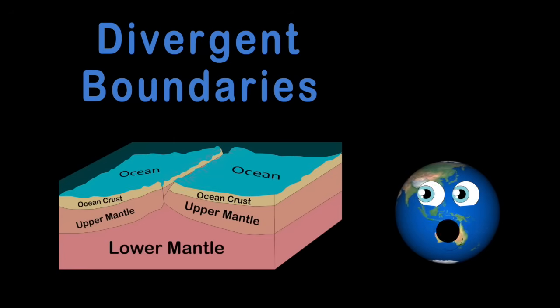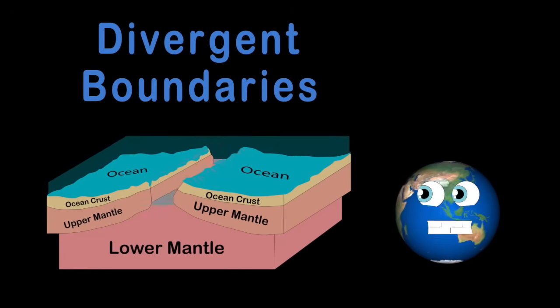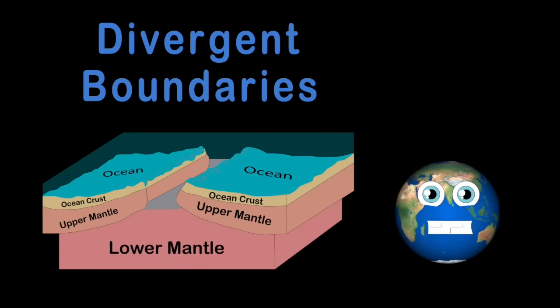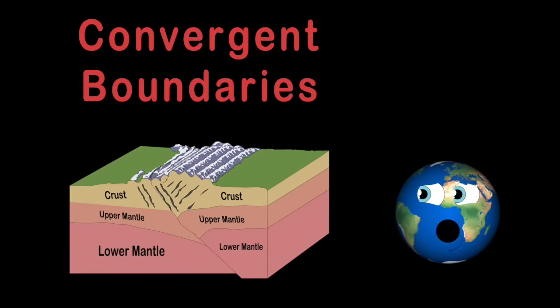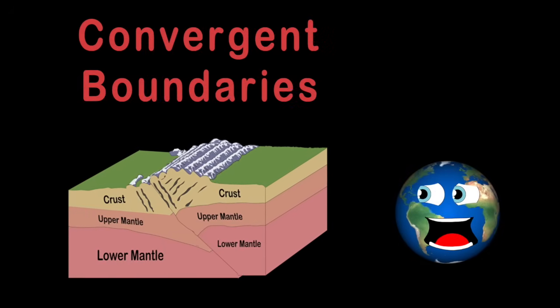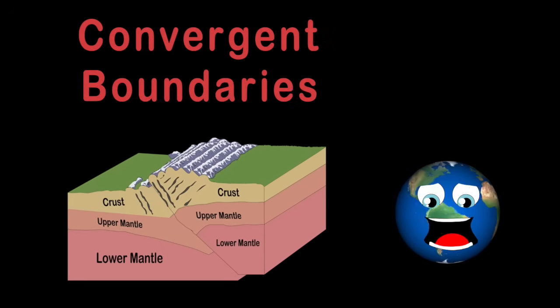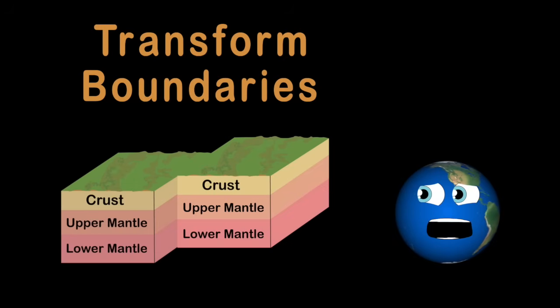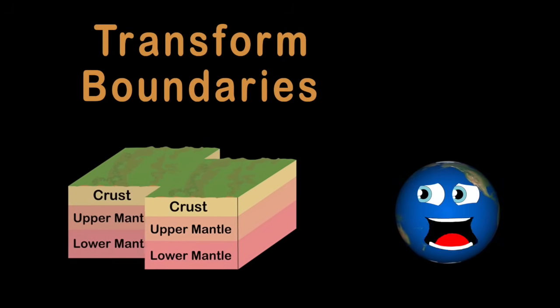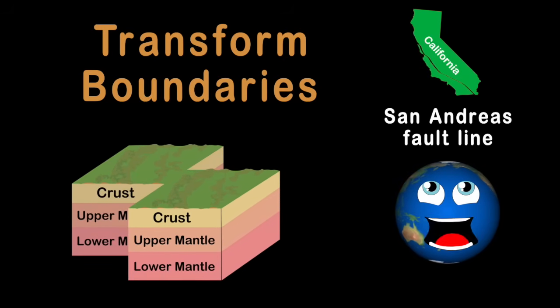Divergent boundaries move away from each other and produce rift valleys, most active between oceanic plates out in the sea. Convergent boundaries move toward one another and destructively collide, and that's where you'd find most earthquakes and volcanoes reside. Transform boundaries are two plates that slide past one another. The San Andreas Fault is the best example of this to discover.